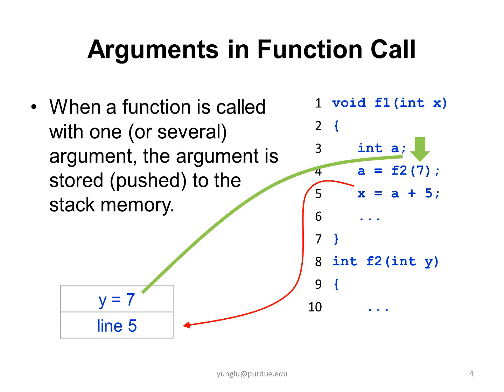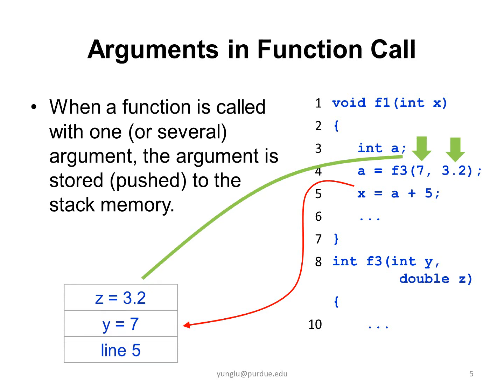In this example, function f2 has one argument y, and the function call at line 4 assigns 7 to the argument. Thus y's value is 7 inside function f2. If a function has several arguments, they are stored in the stack memory. In this example, function f3 is called with two arguments, 7 and 3.2. As a result, y's value is 7 and z's value is 3.2. These two arguments are stored in the stack memory.